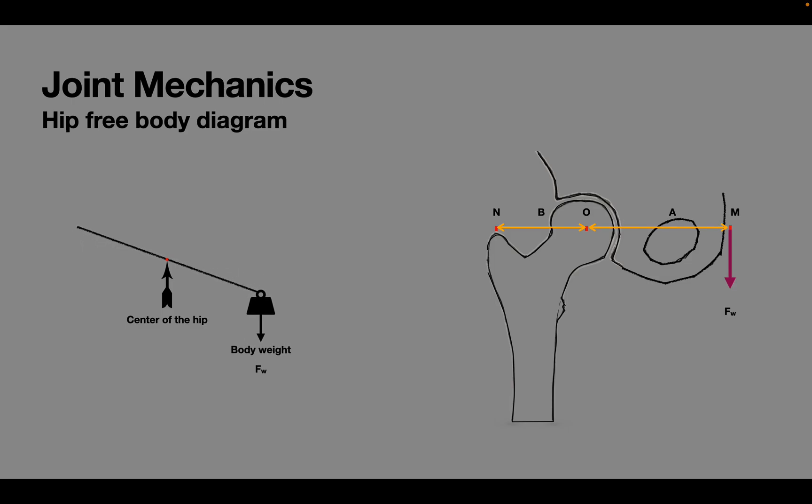Normally the body doesn't allow this, and the abductors produce a force FAB that keeps the pelvis horizontal and stable on the hip, also called squaring of the pelvis.